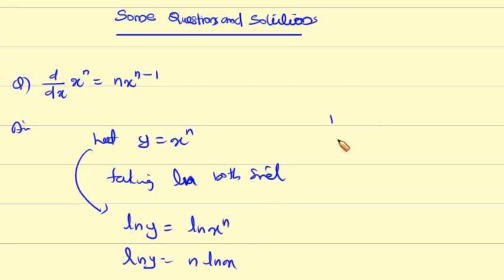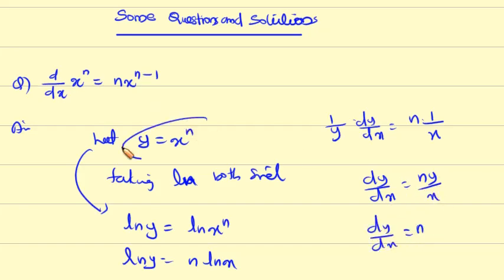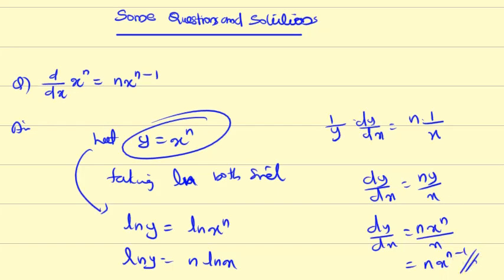Differentiating both sides: 1 by y, dy by dx is equal to n into 1 by x. Therefore dy by dx is equal to n y by x. Since y equals x raise to n, dy by dx equals n into x raise to n minus 1.